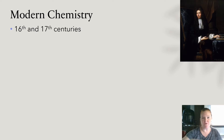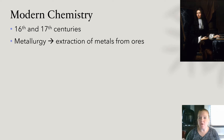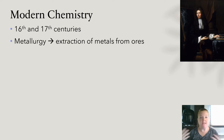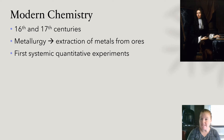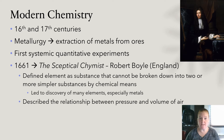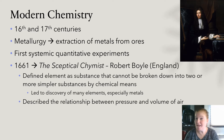Now let's talk about modern chemistry. In the 16th and 17th centuries, metallurgy — the extraction of metals from ores — was significant. Ores are mined and contain metals, and metallurgy is the extraction of those metals from the ore. This is where the first systematic, quantitative experiments were conducted. In 1661, Robert Boyle from England wrote a book called The Skeptical Chemist.